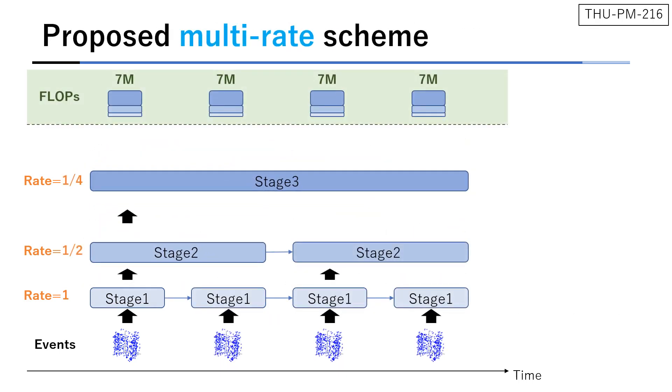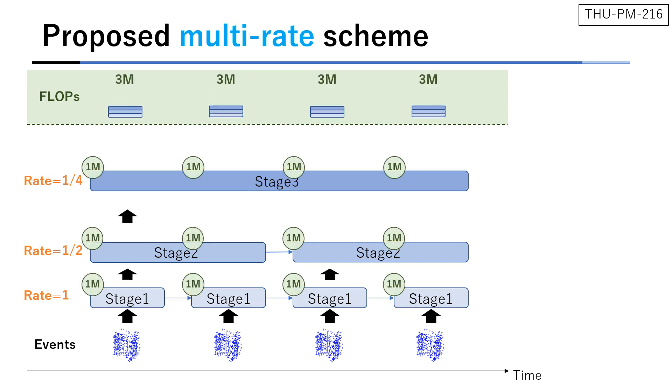To this end, our key idea is a multi-rate network with decreasing operating rates. In this example, stage 1 operates at every step, stage 2 operates at every 2 steps, and stage 3 operates at every 4 steps. Thanks to the multi-rate scheme, the computation at later stages are distributed over multiple time steps, decreasing flops per time step from 7 mega to 3 mega flops.